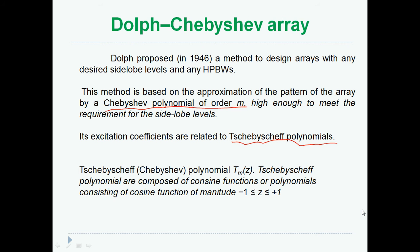Dolph-Chebyshev Array is another Chebyshev Array. Dolph proposed this method to design an array with desired side lobe levels or any half power beam width. This method is based on the approximation of pattern of array by Chebyshev Polynomial of order M, and the excitation coefficients are related to Tschebyscheff Polynomial.